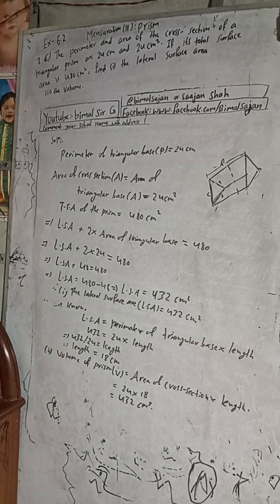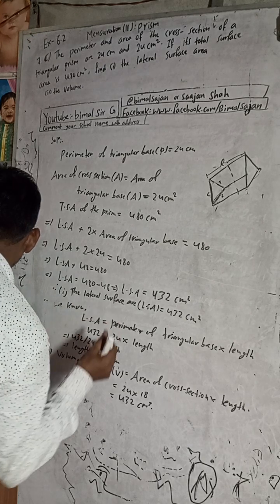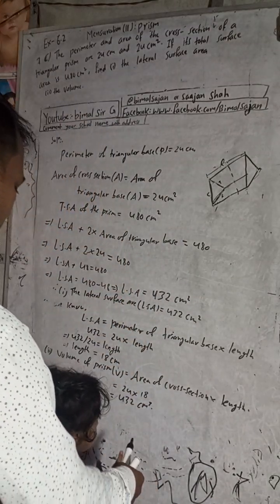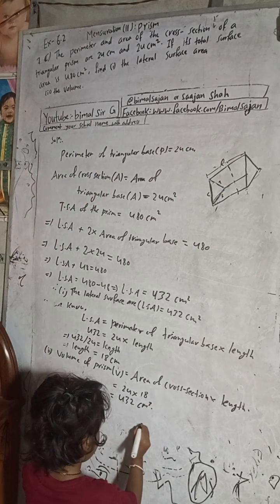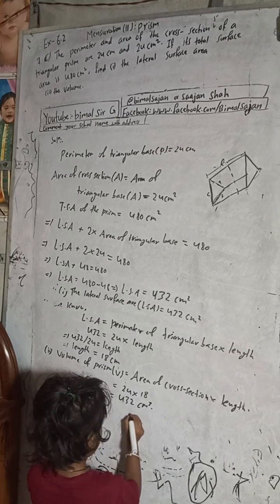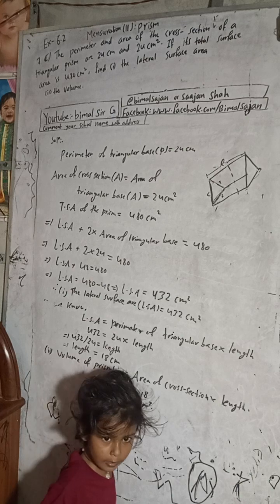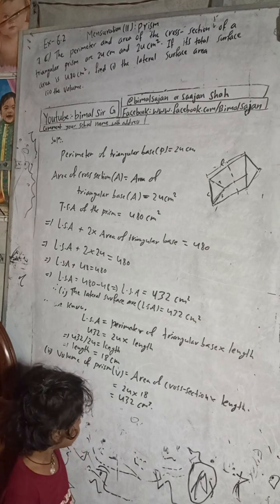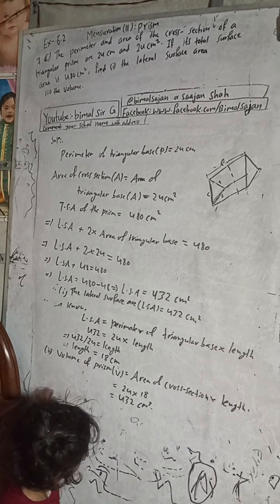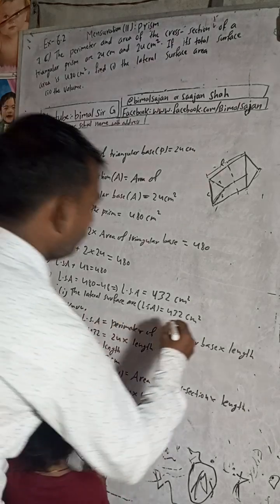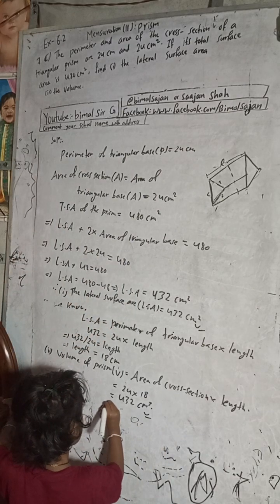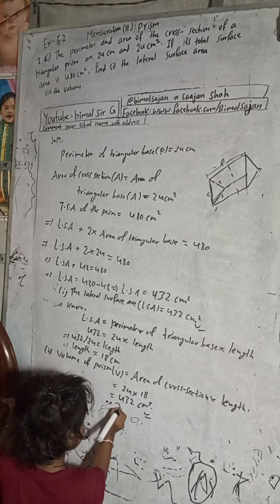So the solution of question 7c is complete. The answers are: lateral surface area equals 432 cm square, and volume equals 432 cm³. This is the required solution of this question. If you find this video useful, please like the video.